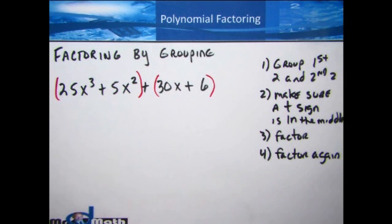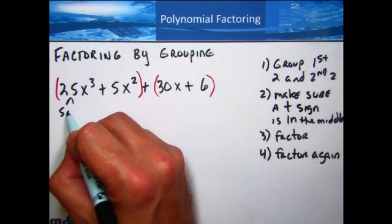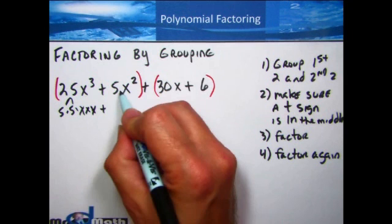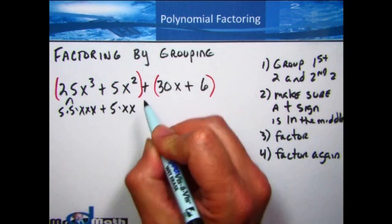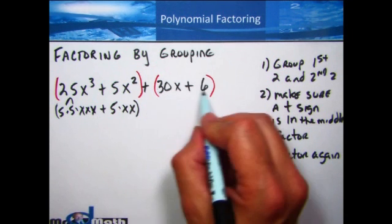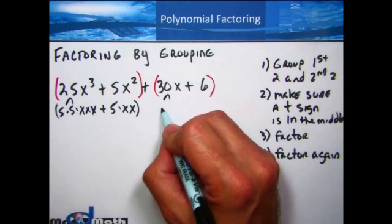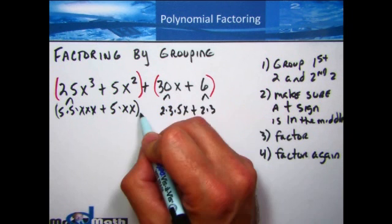Next is step three: factor each set of parentheses. Start by factoring like we did in the last section. The factors of 25 are 5 times 5; x to the third power is x times x times x. Then plus 5x squared: the factors of 5 is just 5, and we have x times x. That's my first group. For the second group, the factors of 30 are 2 times 3 times 5, and we have x.